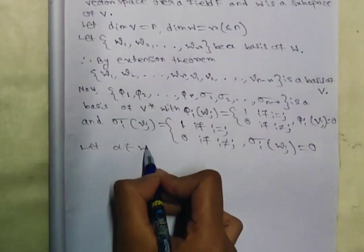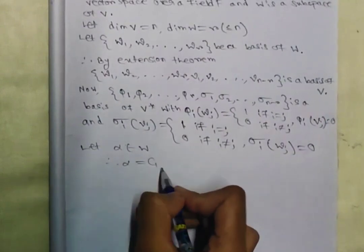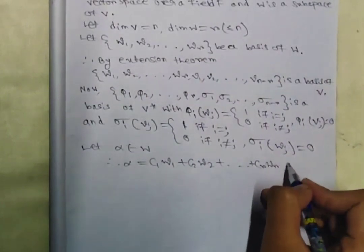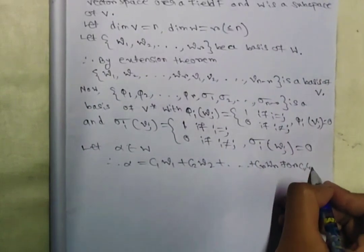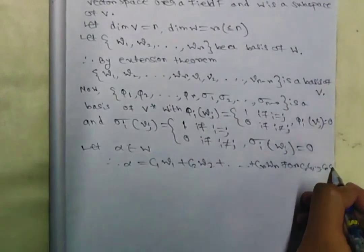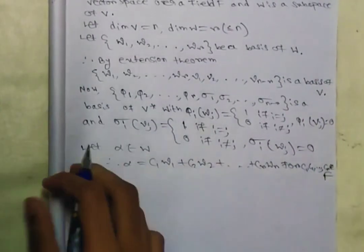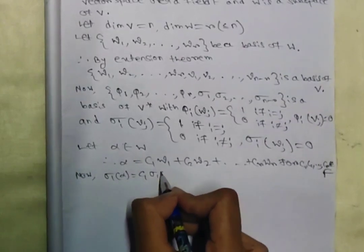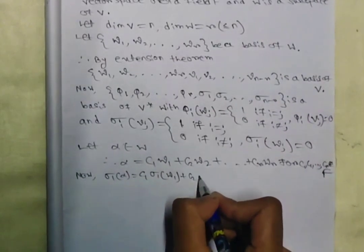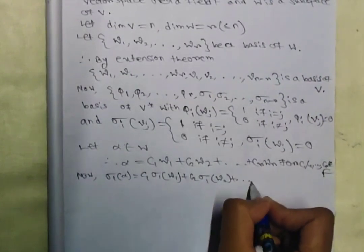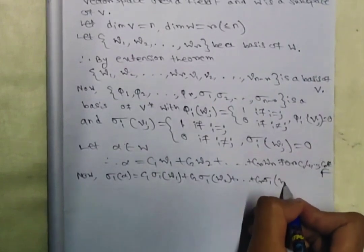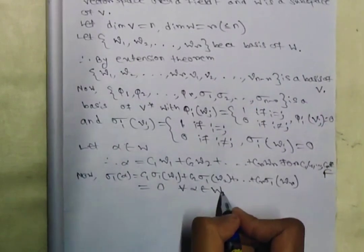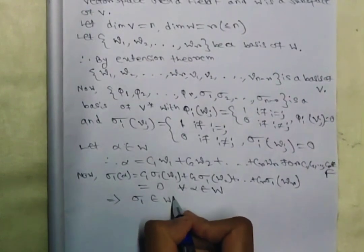Now let alpha belong to W. Therefore alpha equals c1*w1 + c2*w2 + ... + cr*wr, where c1, c2, ..., cr belong to field F. Now sigma_1(alpha) equals c1*sigma_1(w1) + c2*sigma_1(w2) + ... equals c1*sigma_1(w1), which equals 0. Therefore, sigma_1(alpha) equals 0 for all alpha belonging to W, which implies sigma_1 belongs to W naught.